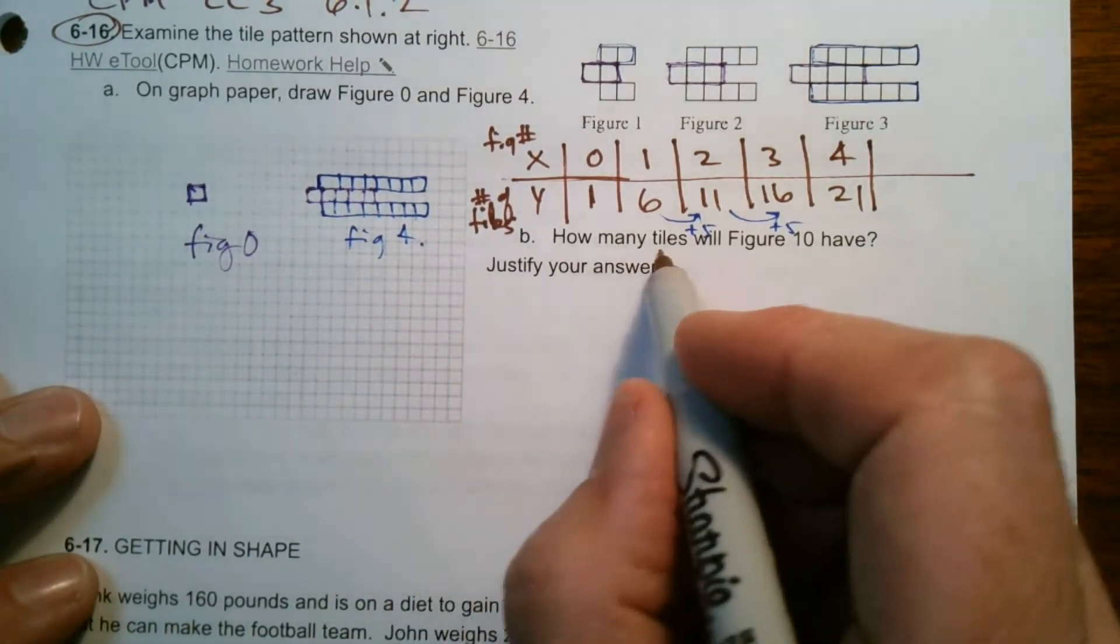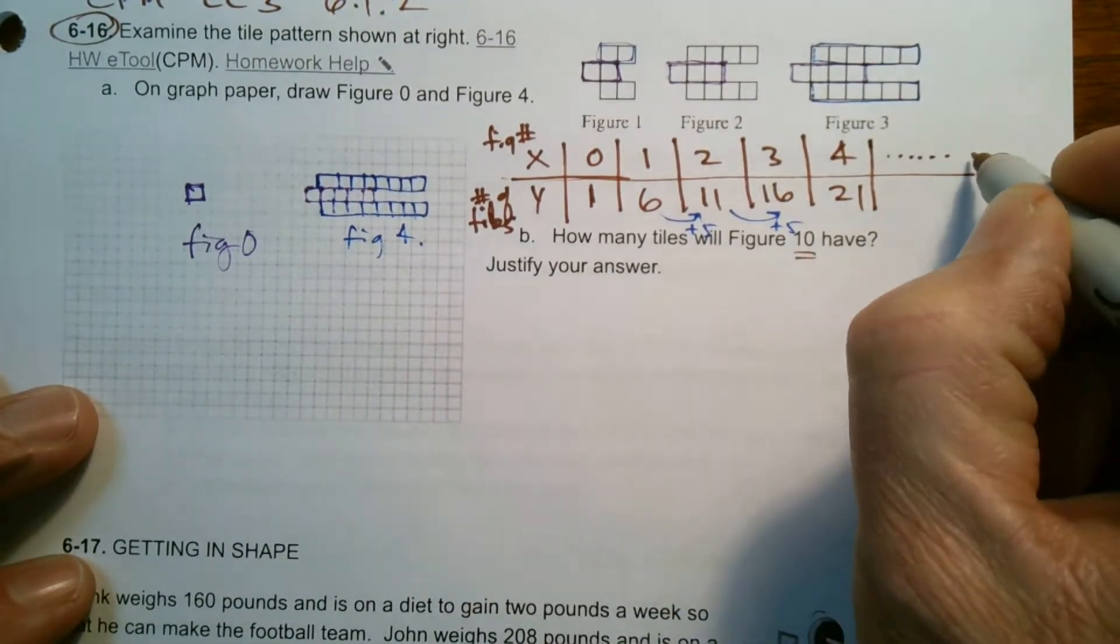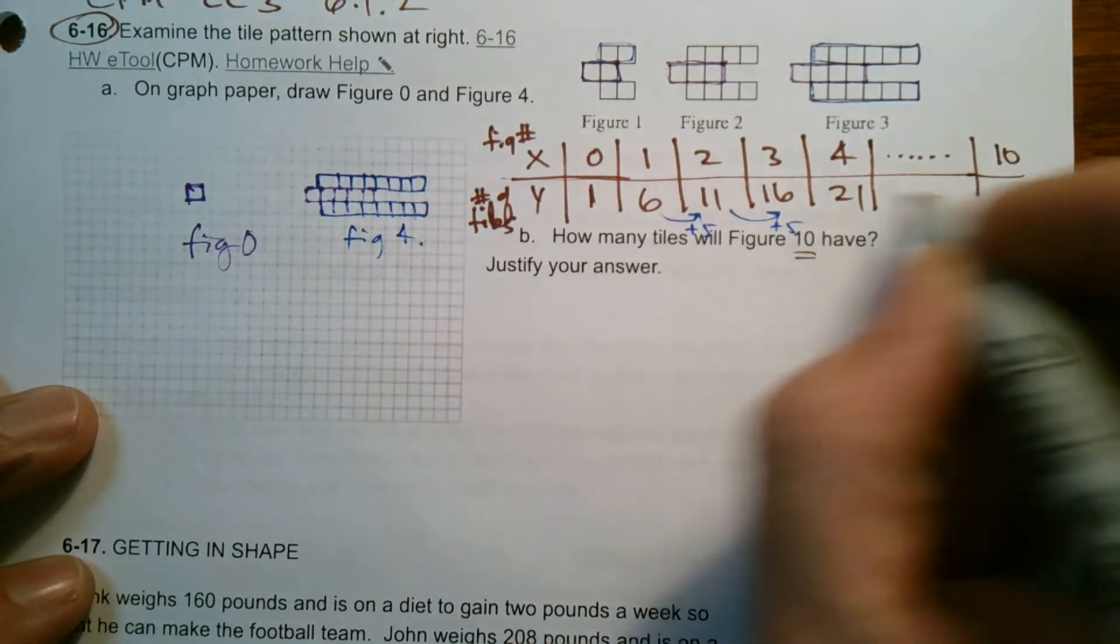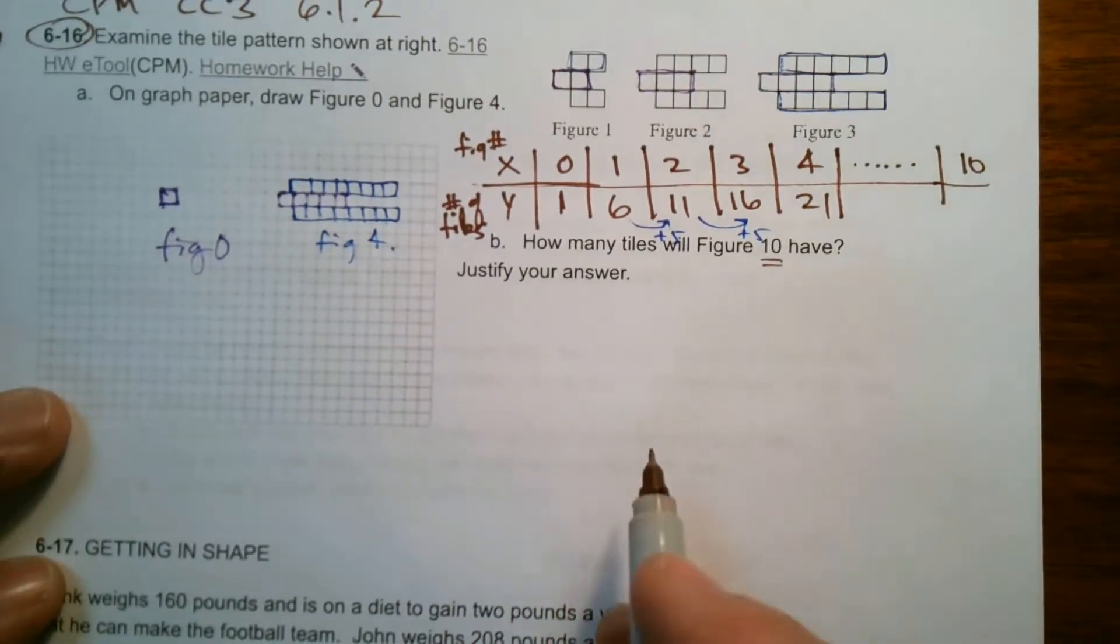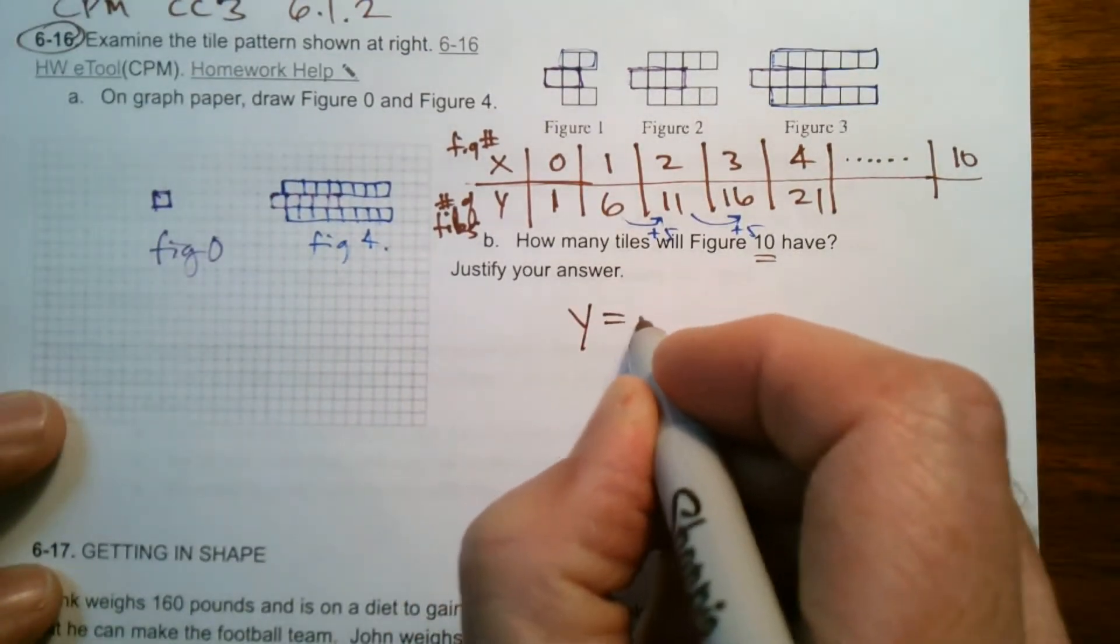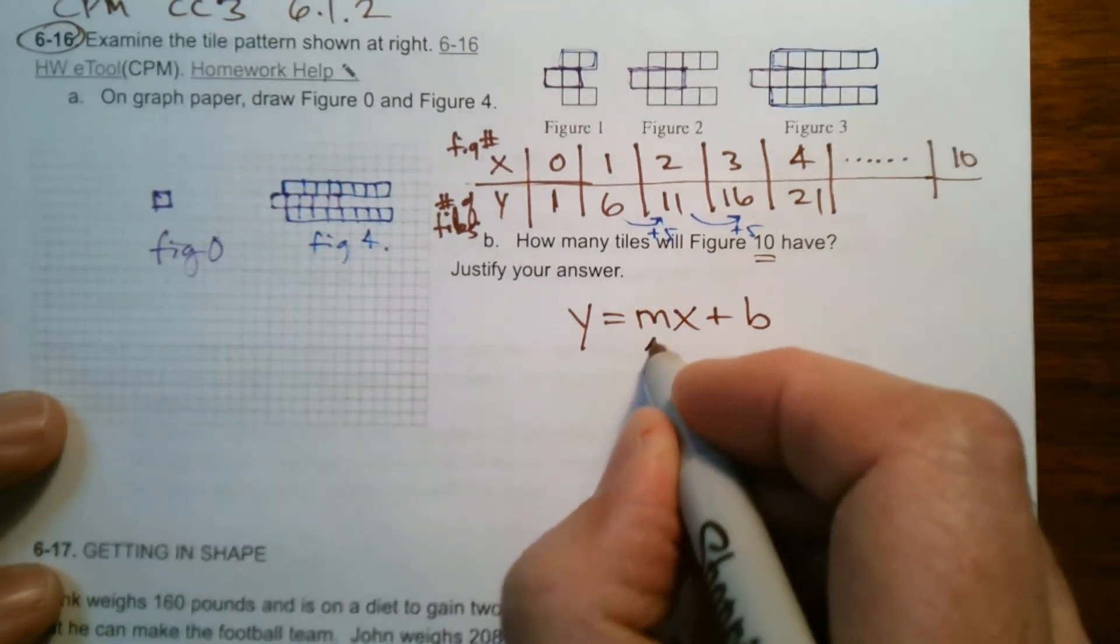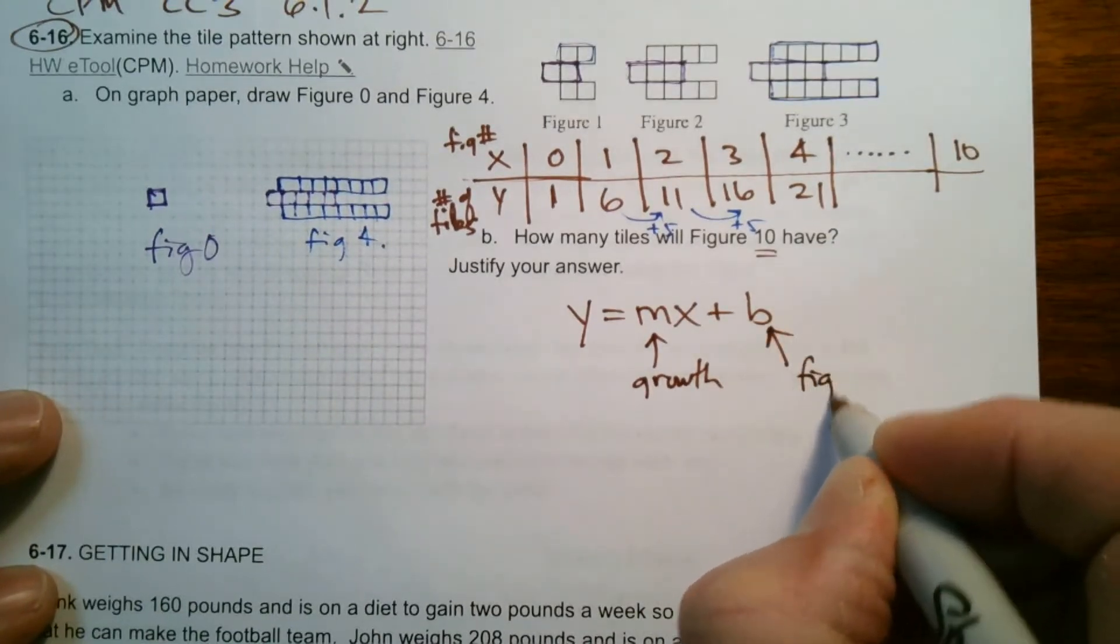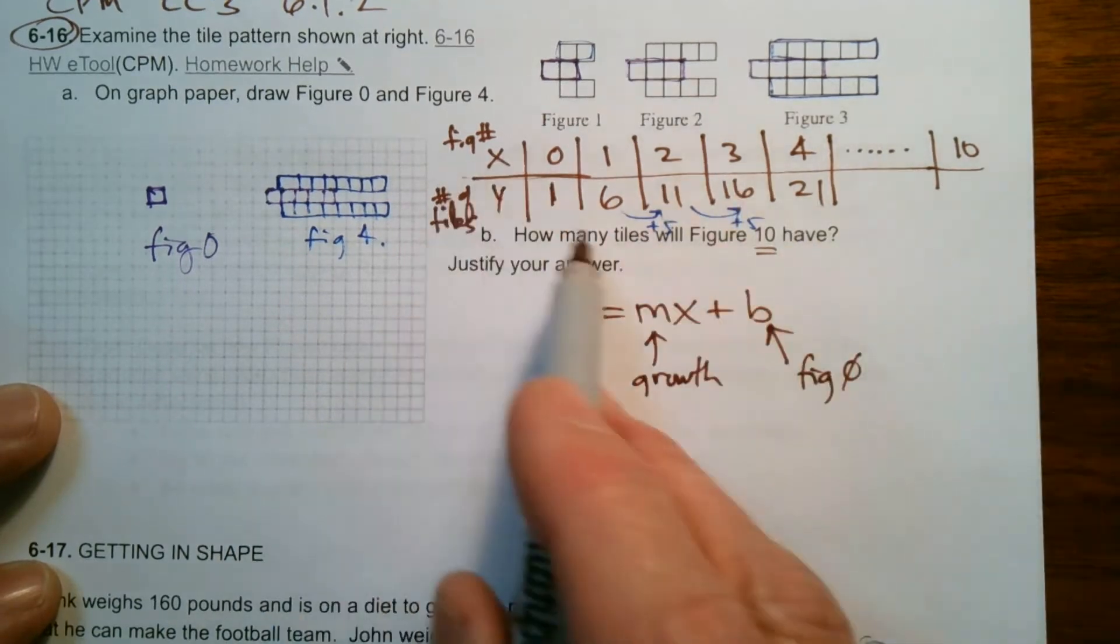It wants to know how many tiles in Figure 10. So here's the thing. We could continue my pattern and keep adding 5 each time until I get to Figure 10, so I'd have to have a longer table, but eventually I'd get there. Or another way would be to create the rule. Remember, all rules for these tile patterns are in this form of y equals mx plus b. And m is always your growth, and b is always your Figure 0 or your initial value.